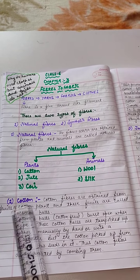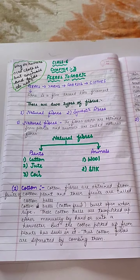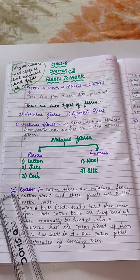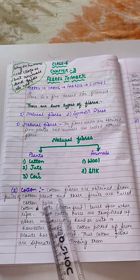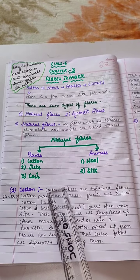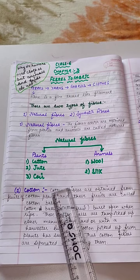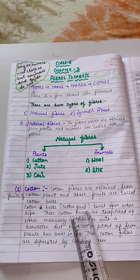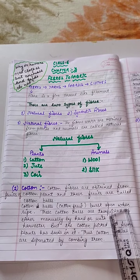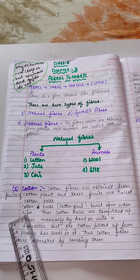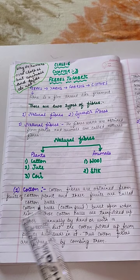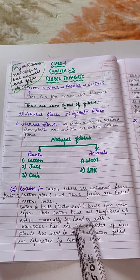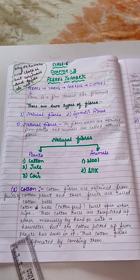First is cotton fiber. Cotton fibers are obtained from the fruits of the cotton plants, and these fruits are called cotton balls. Cotton balls or cotton fruits burst open when ripe. After ripening they burst, and these cotton balls are then picked up either manually by hand or with a harvester.